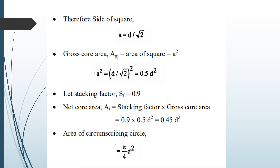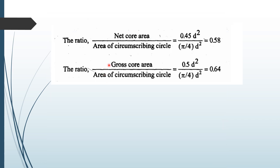Assuming a stacking factor of 0.9, the net core area ai = 0.9 × 0.5 d² = 0.45 d². Using the area formula for a circle, the area of the circumscribing circle = π/4 · d². With these calculations, we can obtain the ratio: net core area divided by area of circumscribing circle = 0.45 d² / (π/4 · d²).